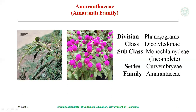It belongs to the flowering plants division and class Dicotyledonae. It shows the taproot system and reticulate venation on the leaves, so it is included under class Dicotyledonae and subclass Monochlamideae. Monochlamideae means flowers are monochlamideous — the perianth is in a single whorl. It is included under series Curveembryae due to the presence of a curved embryo in the seed.